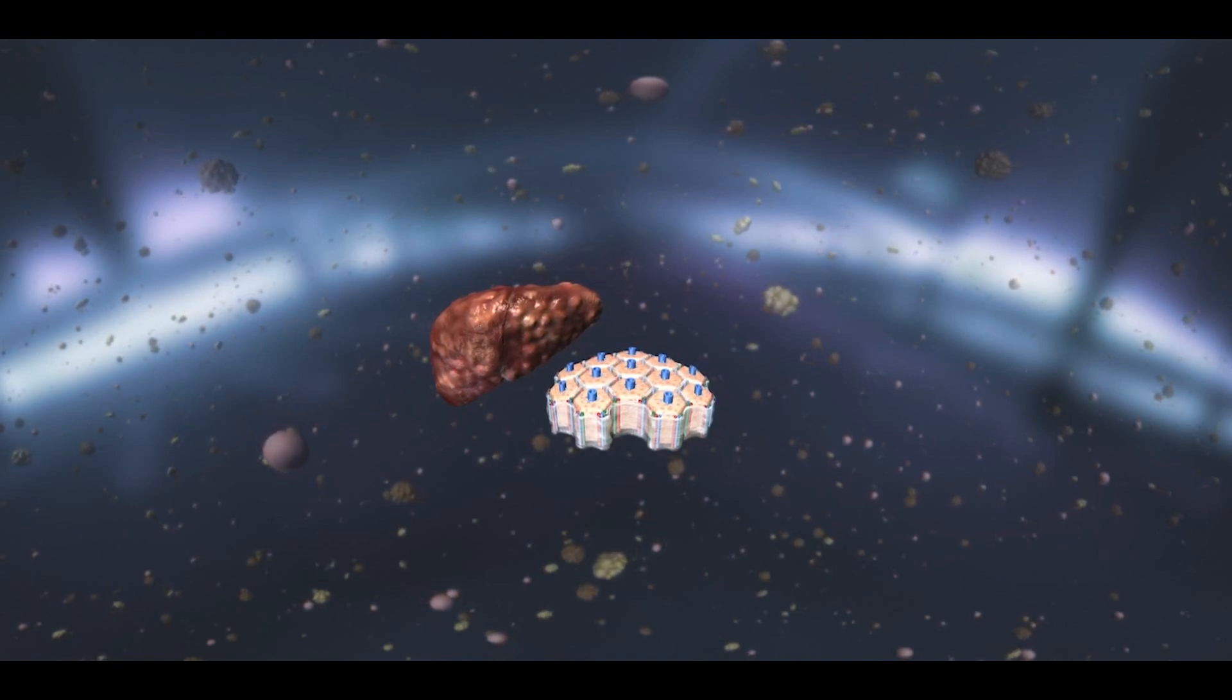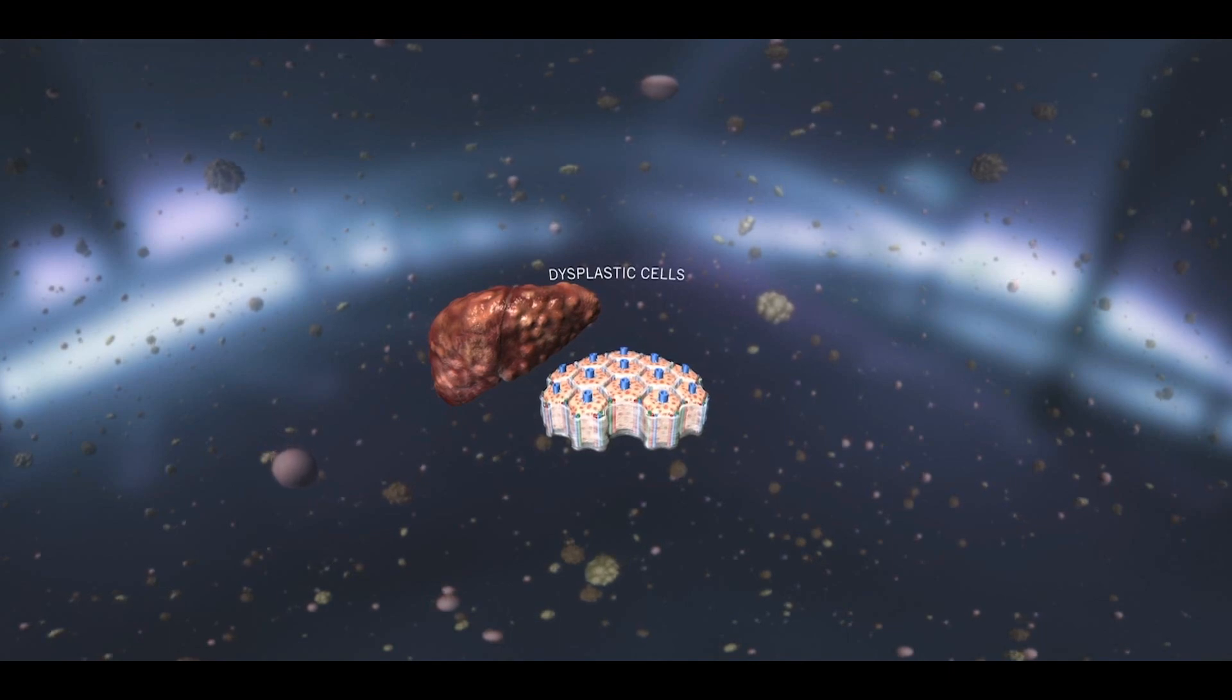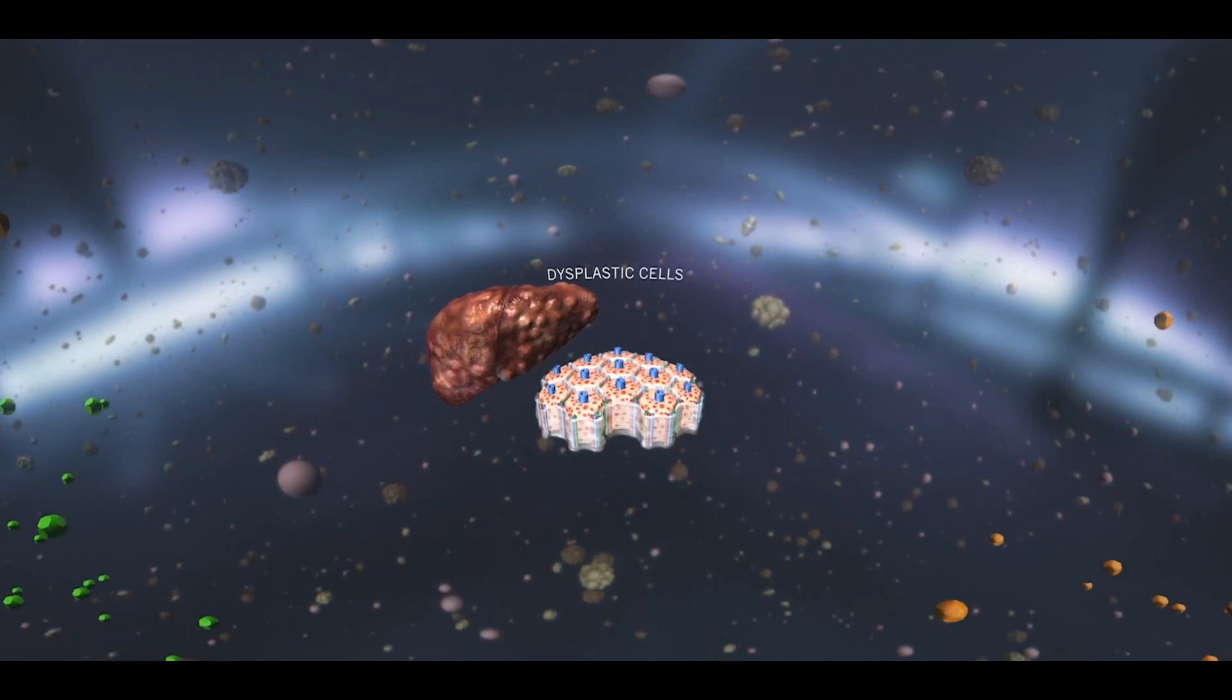Cirrhotic livers exhibit focal lesions, areas of abnormal, immature hepatocytes that are predisposed to malignant transformation.